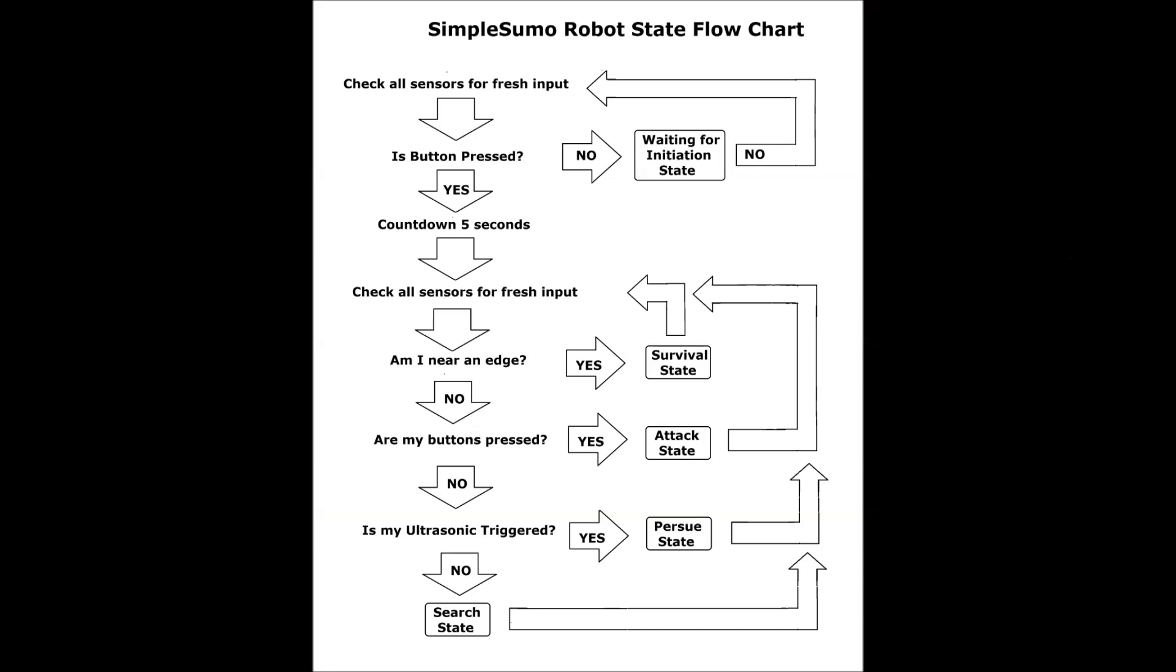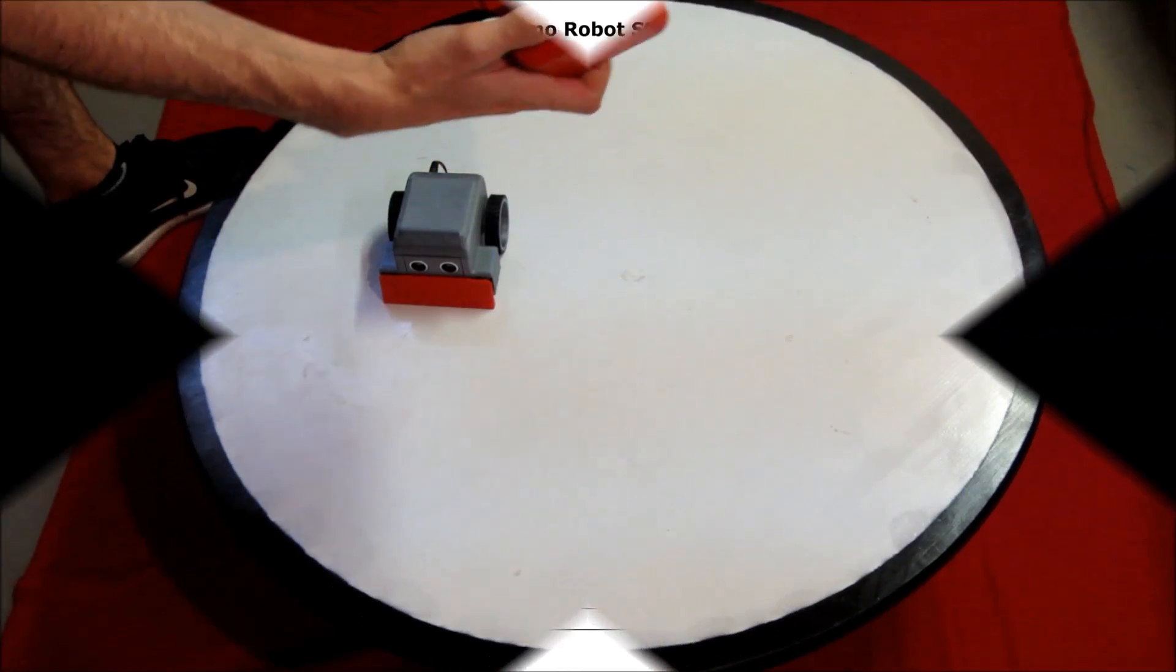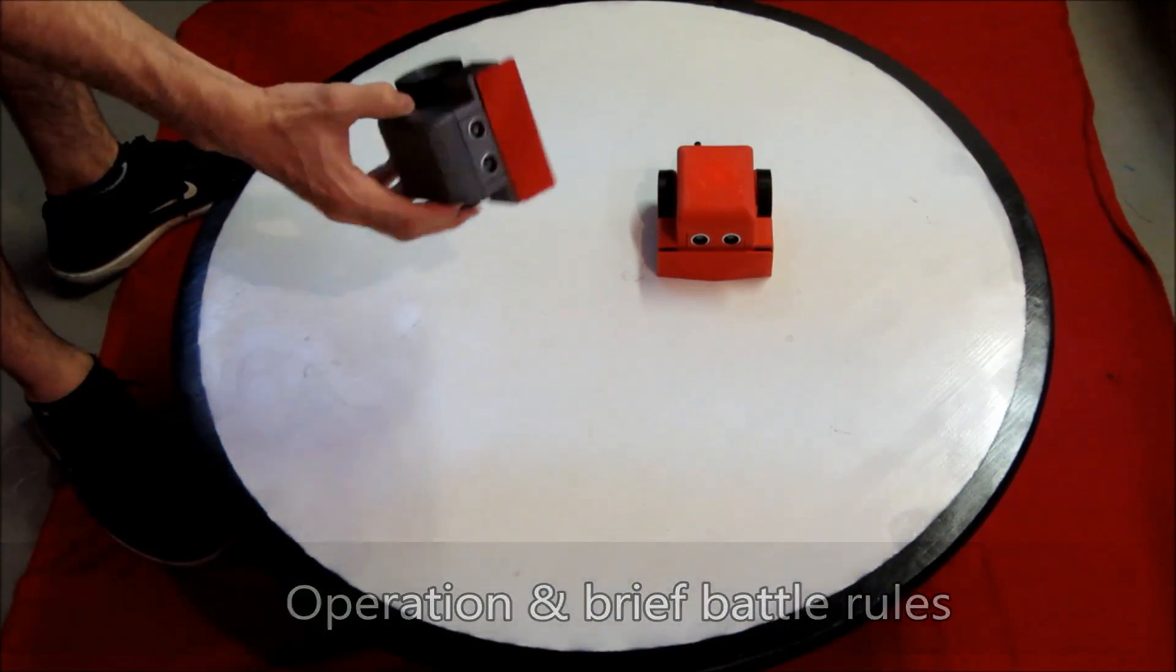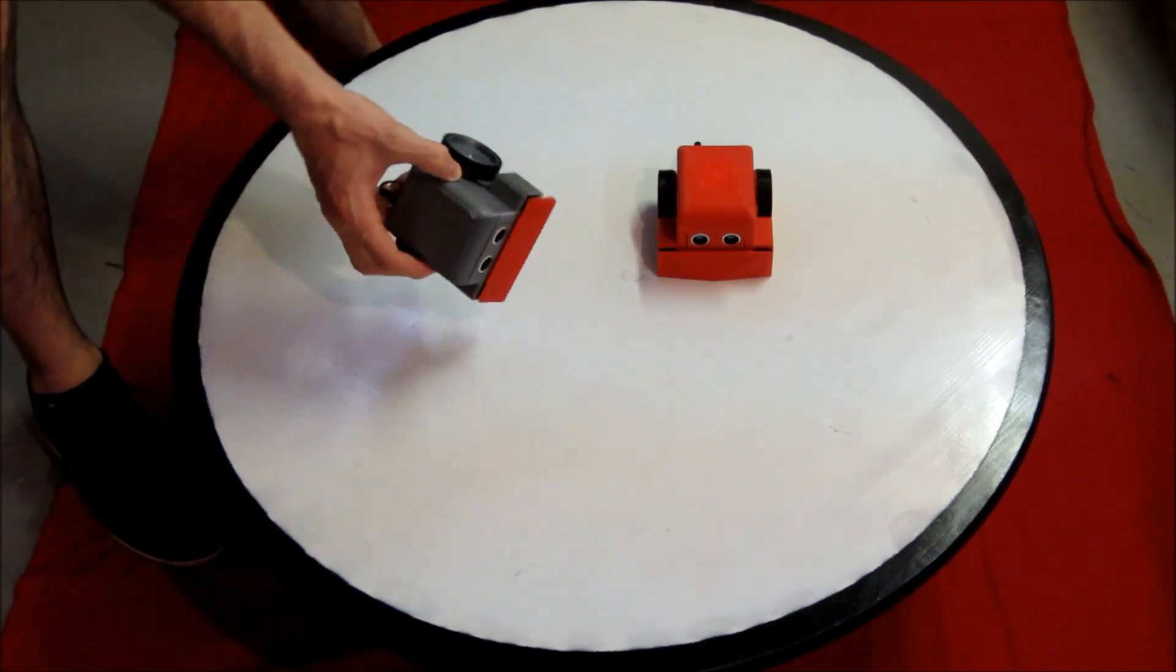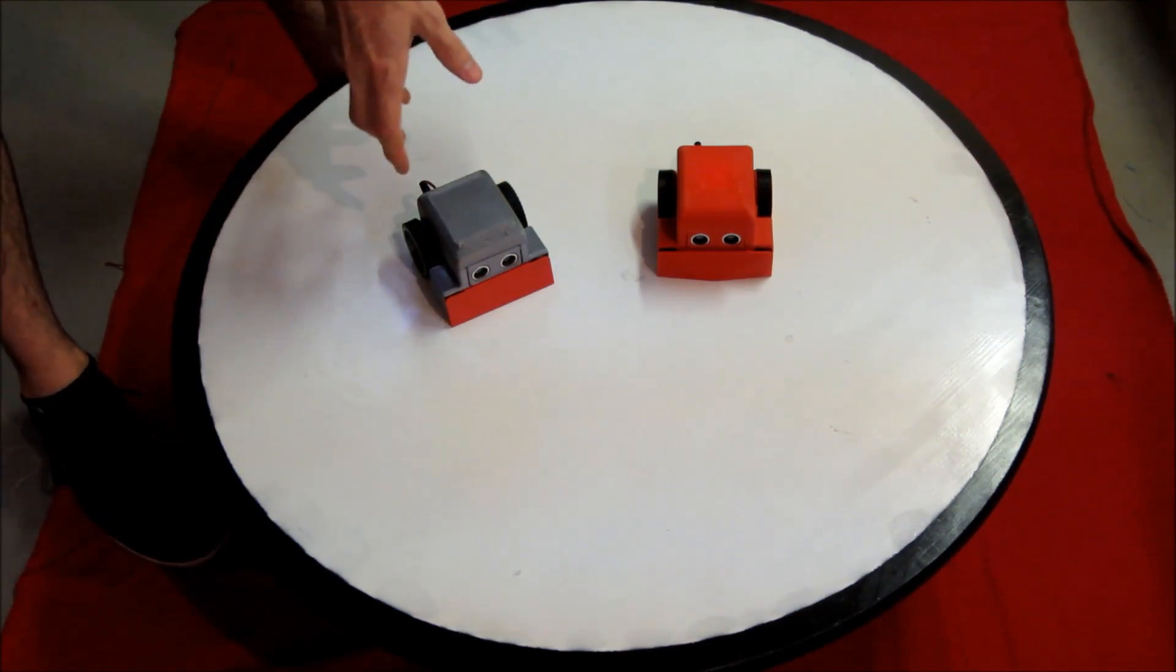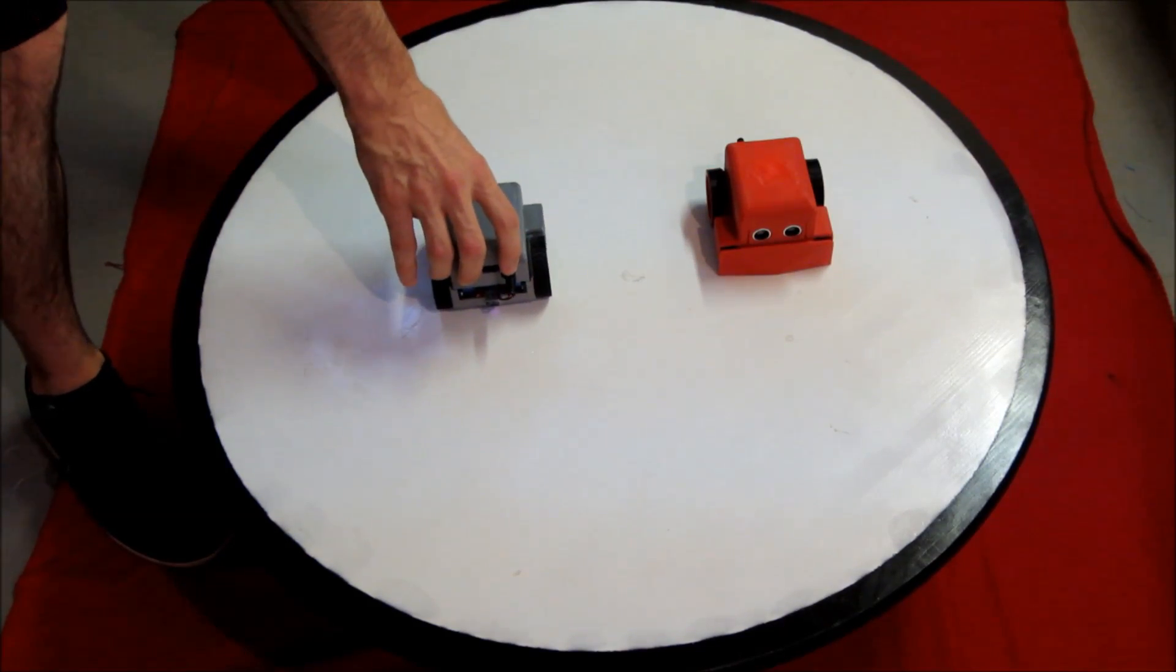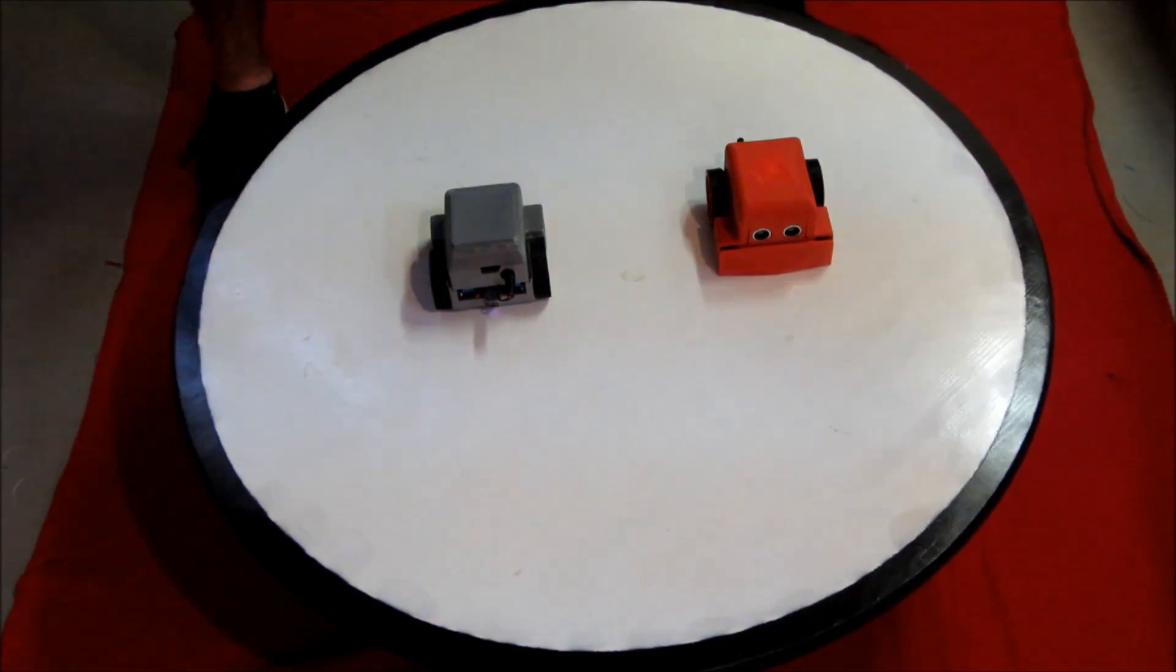Here I show, I've got the flow chart to explain it better. Its program is set to have it wait and not do anything until you press the button on the front, and then it will do a countdown to begin the battle. That's listed in the rules of Sumo. It has to wait five seconds before it starts.